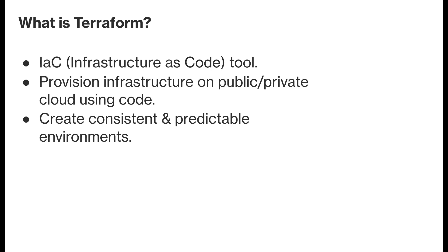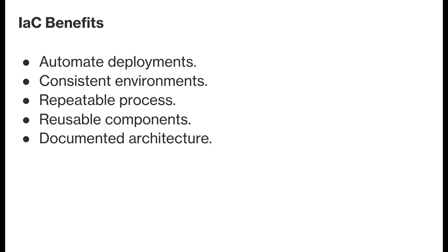So first of all, what is Terraform? Terraform is an infrastructure as code tool and it's used to provision infrastructure on public or private cloud using code. You can use Terraform to create consistent and predictable environments. The benefits of IaC include automating deployments, creating consistent environments using repeatable processes, creating reusable components, and Terraform will self-document our architecture.